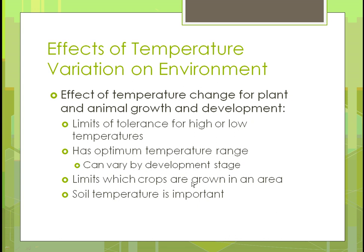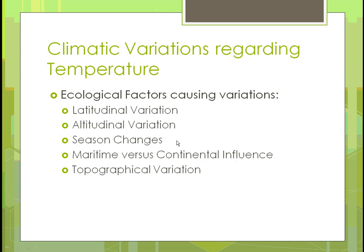Temperature will limit which crops can grow in an area. If the temperature doesn't reach the right range for a plant to grow, you can't try to grow it there. A good example is pineapples and coconuts — they really wouldn't grow in the Midwest because you don't have a long enough season. Another important factor is soil temperature; if it doesn't get warm enough, it won't allow all of those processes to happen.